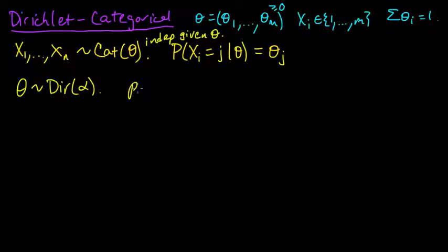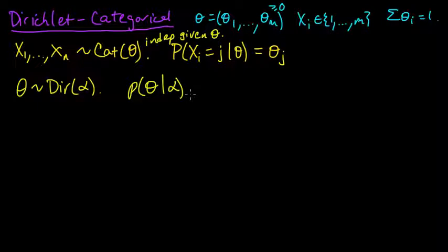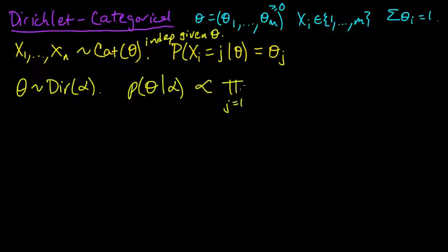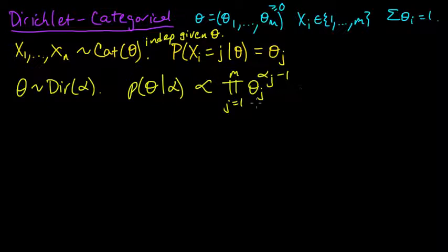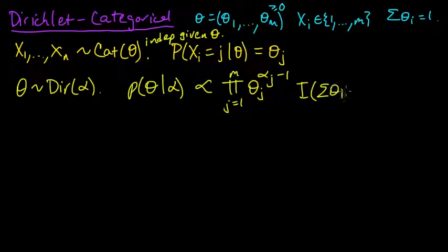This means that the density for theta, given alpha — just to emphasize the dependence on alpha — is proportional to the product as j goes from 1 to m of theta_j to the alpha_j minus 1. We also include the indicator function that theta satisfies the simplex conditions: the sum of the thetas equals 1 and all entries are greater than or equal to 0.